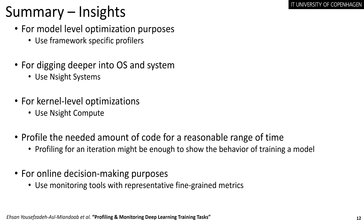To wrap up: if we want to optimize at the model level, using framework-specific profilers may be enough. For deeper insights into operating systems and system behavior, Nsight Systems is a good choice. For kernel-level optimizations in CUDA, Nsight Compute can be used. When profiling, it's better to limit profiling to the specific code section of interest, and profiling for just one training iteration may be sufficient since it likely captures the behavior of the whole training process. Finally, for online decision-making, using monitoring tools with low overhead and finer-grained metrics is recommended. Thanks for your attention.